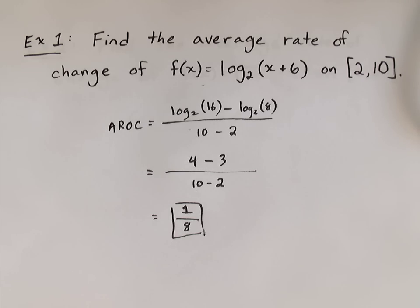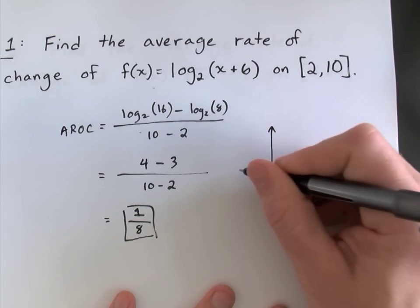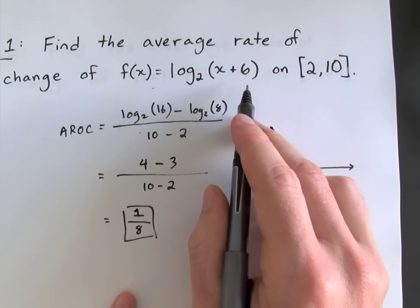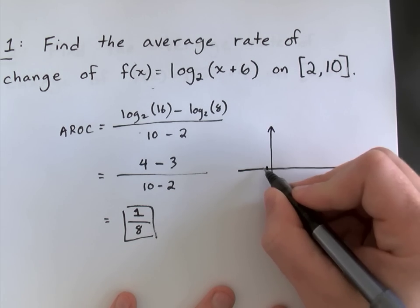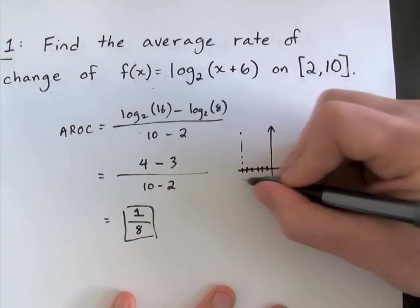And before we get on to the next example, just here's a quick graph, show you what we just calculated. The log function shifted 6 units to the left. 1, 2, 3, 4, 5, 6. There's the asymptote at x equals negative 6.